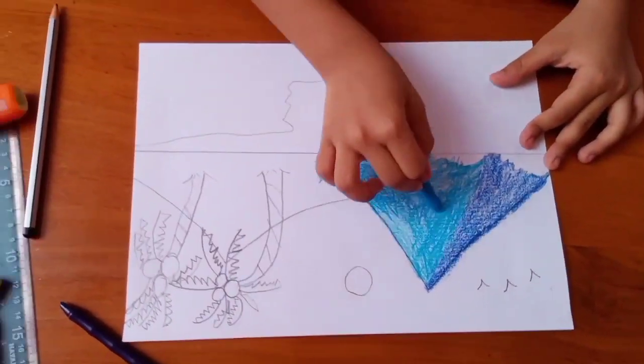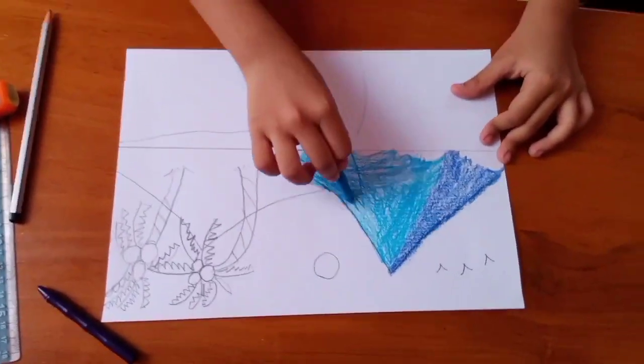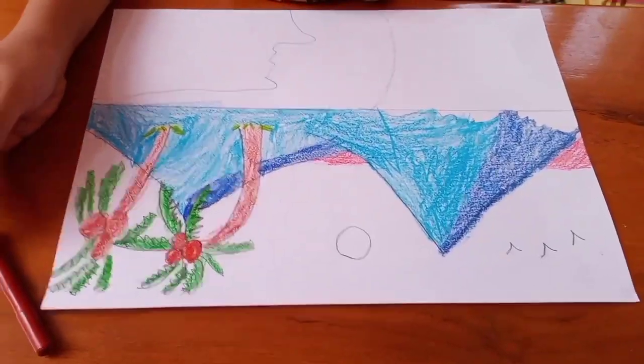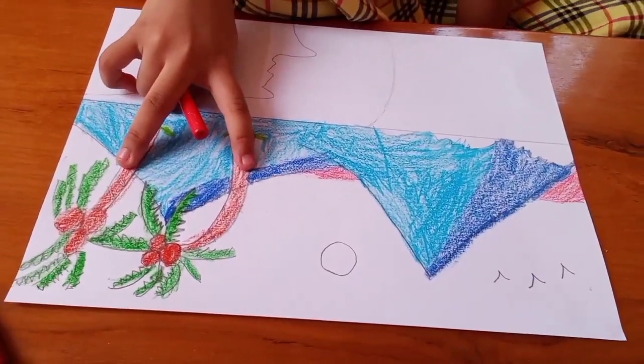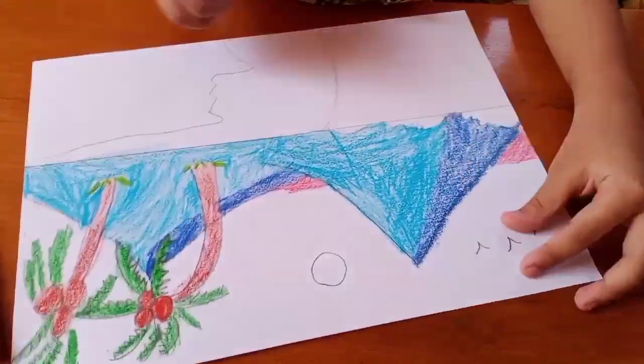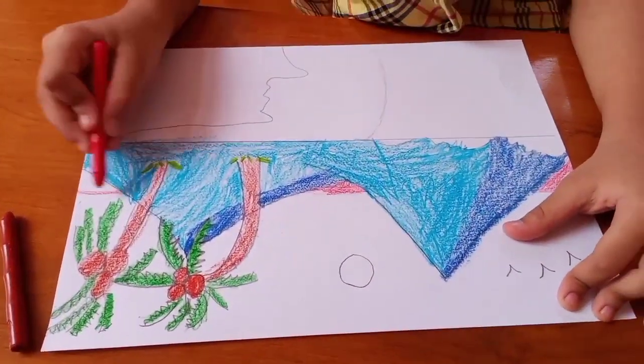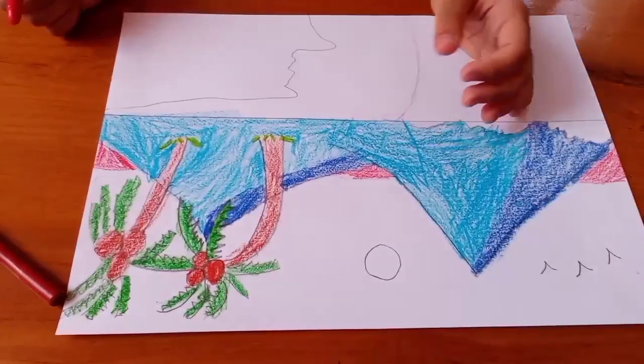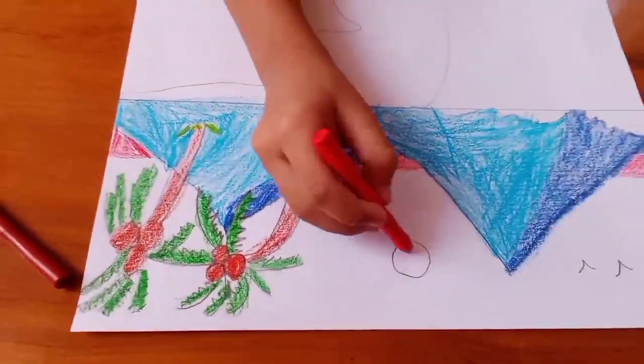So I finished coloring the first mountain. I will color all. So I already colored these two coconut trees. So I need to color this. This one. So I will color this sky. I don't need to color this sun.